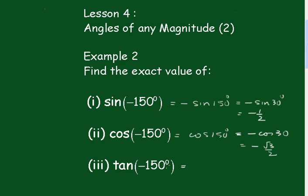Now we take the tan of minus 150 — that's minus the tan of 150. Now tan of 150 is negative in the second quadrant, so this changes to a plus, so it'll be the tan of 30, which of course is 1 over root 3.